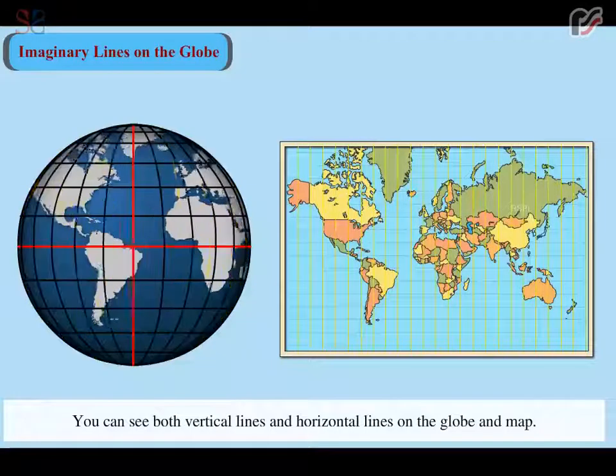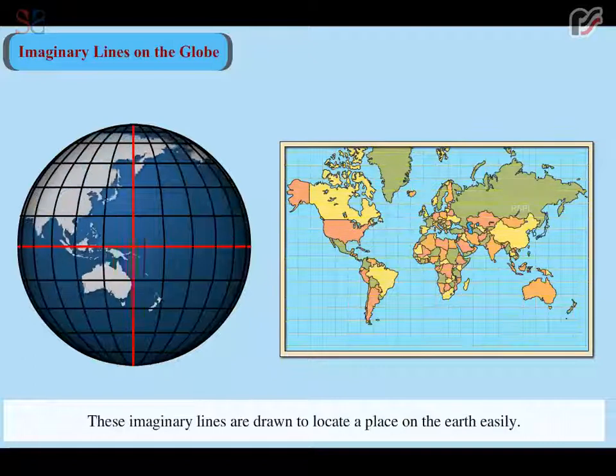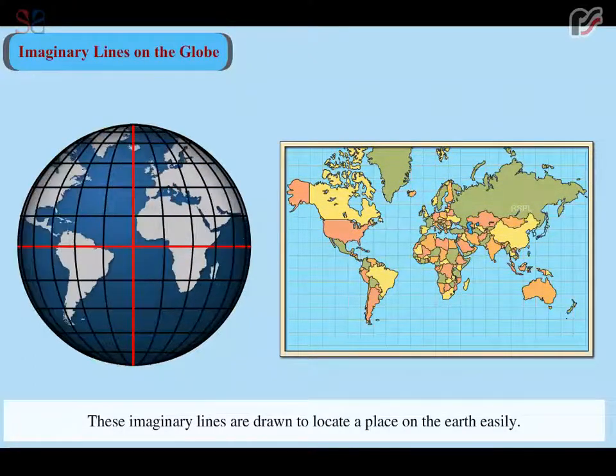You can see both vertical lines and horizontal lines on the globe and map. These imaginary lines are drawn to locate a place on the Earth easily.